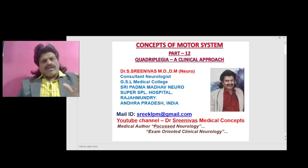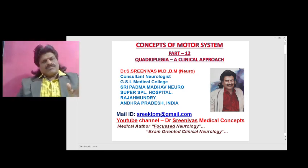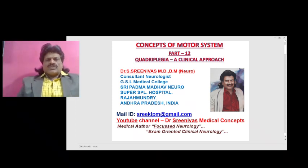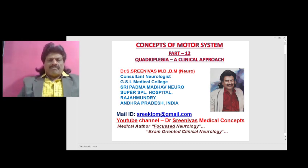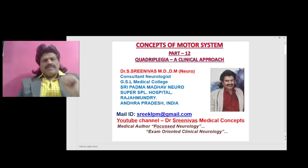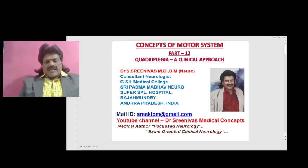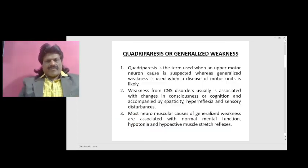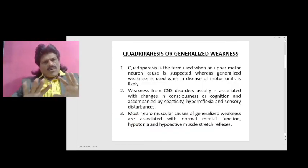Today we are going to talk about a very interesting topic: quadriplegia — a clinical approach. This is concepts of motor system, part 12. In the last two episodes we talked about hemiplegia clinical approach and paraplegia clinical approach. Now in this edition we are going to talk about quadriplegia. The related term is quadriparesis or generalized weakness.